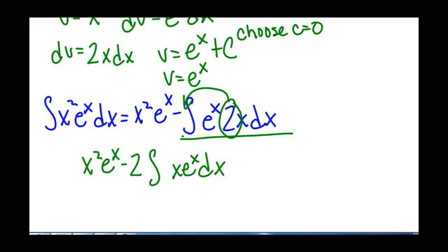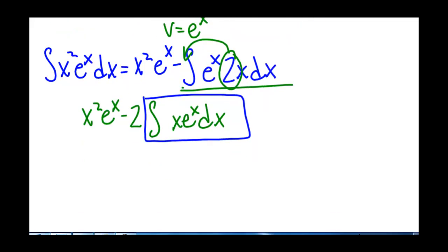This remaining integral, we can't just solve it directly. We don't simply know the integral of x e to the x — it's not just e to the x times x squared over 2. If we treat this as a whole new problem, we can solve the integral of x e to the x dx using integration by parts again.